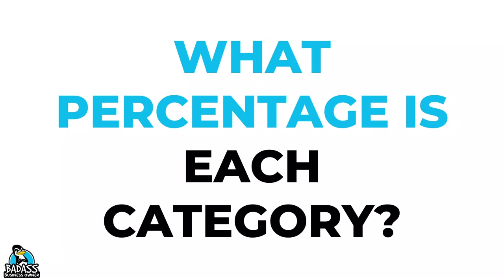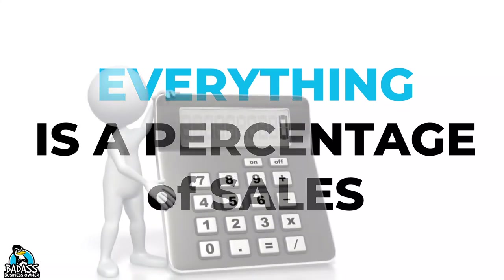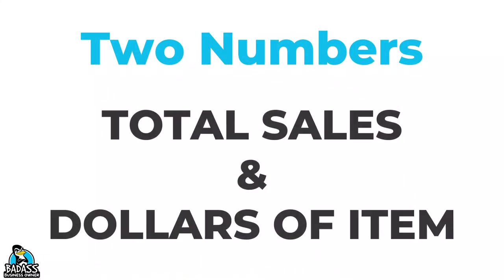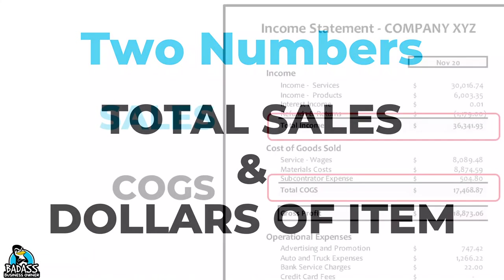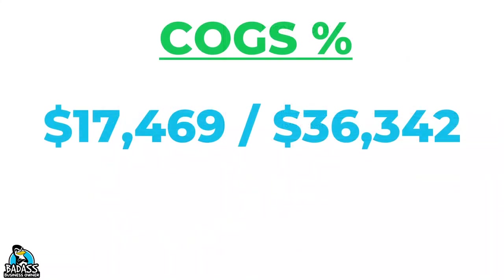This is a pretty easy calculation to do. The main thing to keep in mind is that everything is a percentage of sales — a piece of the pie we start with. You can use a calculator; you only need two numbers. The first is total sales. We then take the item we want to know the percentage of — let's start with cost of goods. If our cost of goods are $17,469, and I'm going to be rounding up for this exercise, we take that number and divide it by total sales of $36,342.